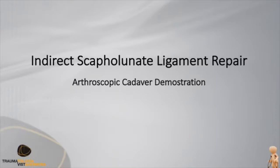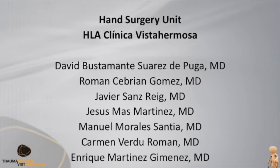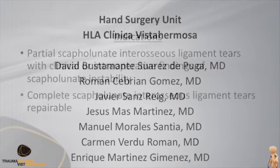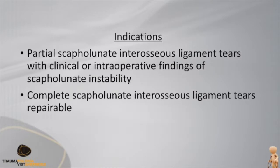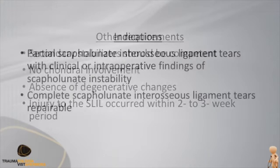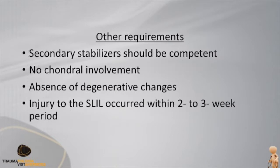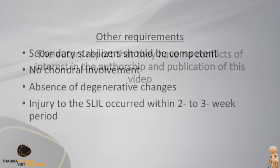We present an arthroscopic technique of an indirect reconstruction of the dorsal scapholunate interosseous ligament for scapholunate instability. This technique is indicated for patients with acute injury in which the scapholunate ligament still maintains some potential for healing.